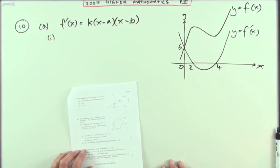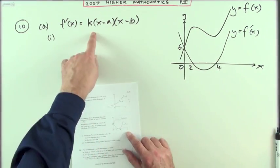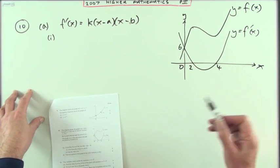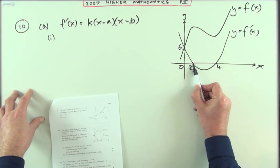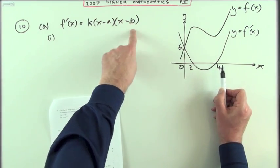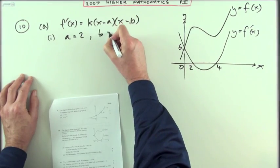So what does it say? Given that f'(x) is of this form which is what it looks like, it looks like a quadratic. Write down the values of a and b and that's what it would be if it cuts at two and it cuts at four it must have had factors x minus two and x minus four. So I can state that straight away. a is two and b is four.